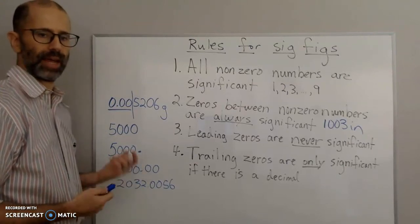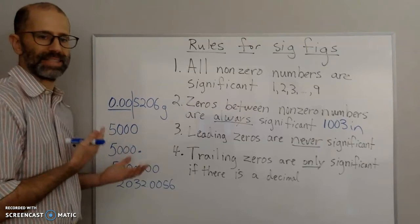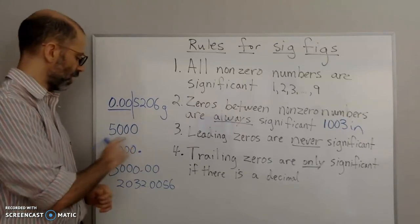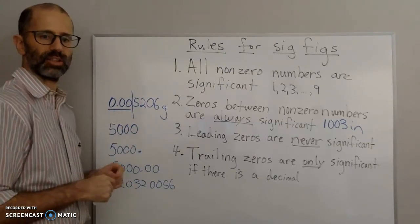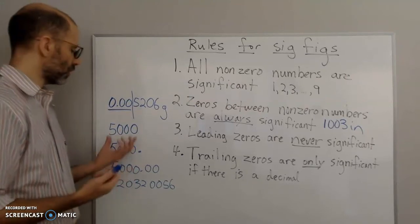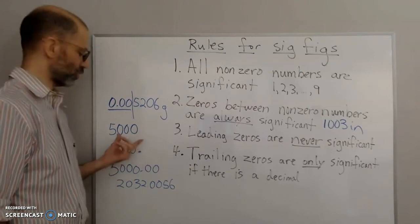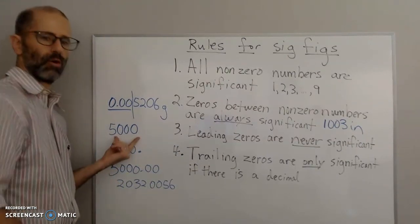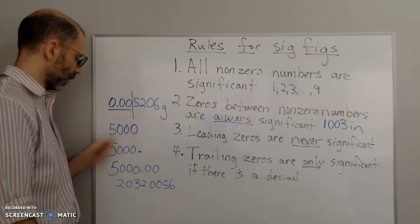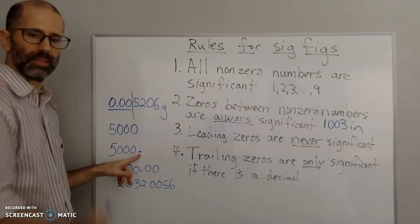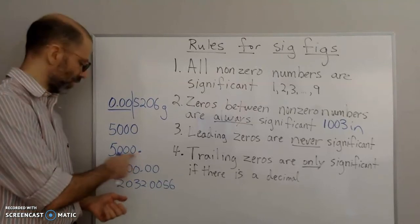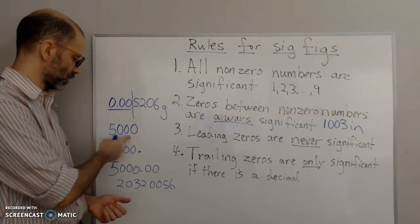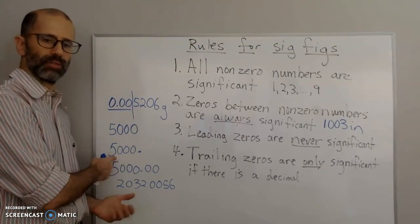Some textbooks say it's ambiguous — you don't know if the zeros are significant. Some say if there's no decimal point, assume they're not significant. So 5,000 with no decimal is either ambiguous or has one significant figure. But if you do have a decimal — like 5,000. — then those zeros become significant. With no decimal: one significant figure. With a decimal: four significant figures.